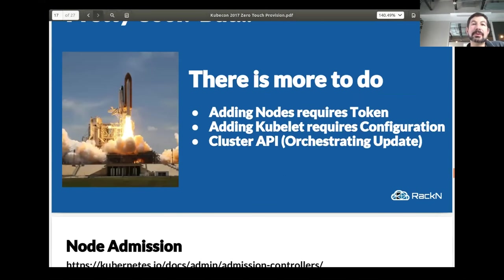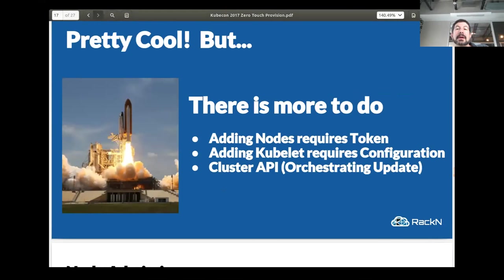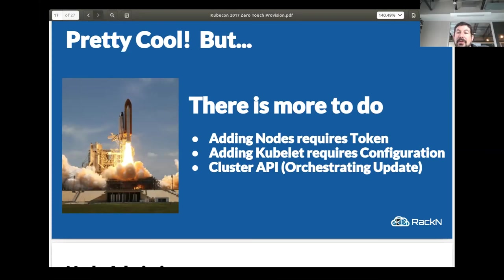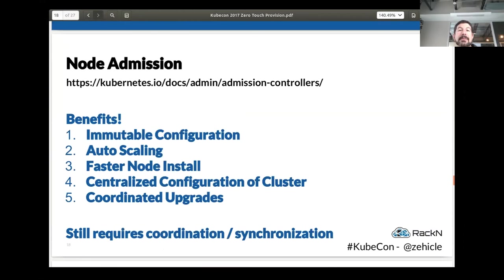In the demo we showed, we're super proud of the work we've done, but we know there are places where we want to see this continue. Adding nodes requires you to have a token, and we've handled that pretty well, though there are still ways to improve the token injection process. Kubelet requires configuration which is what kubeadm is doing. There's still some orchestration. The two major topics we hear in Kubernetes operations circles are node admission and dynamic kubelet configuration.